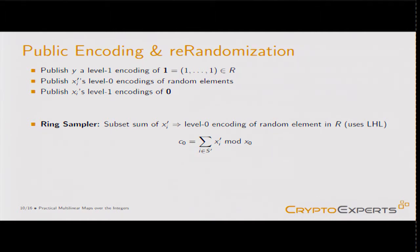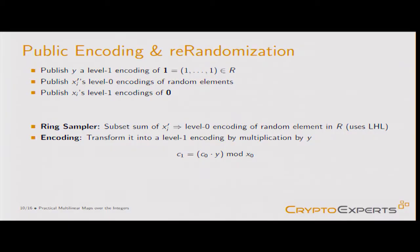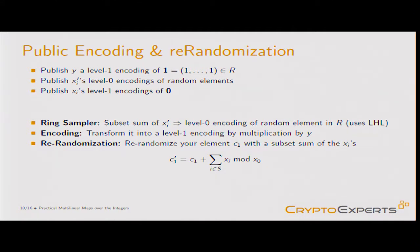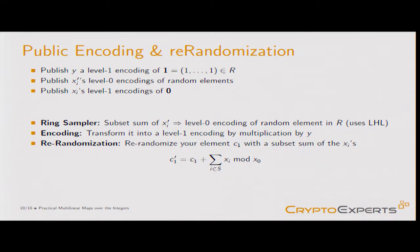We publish level-zero encodings of random elements so that you can generate a scalar that is random by the leftover hash lemma — you just do a subset sum. Then you multiply by a level-one encoding of the all-ones vector, so you get an encoding of the same scalar but now at level one, with a z in the encoding. After that you re-randomize it, because if you just publish this element y is public and you could divide by y to recover the scalar. So you re-randomize by adding a subset sum of level-one encodings of zero.